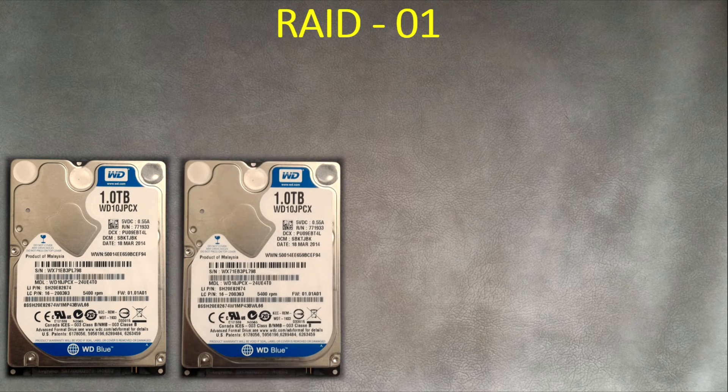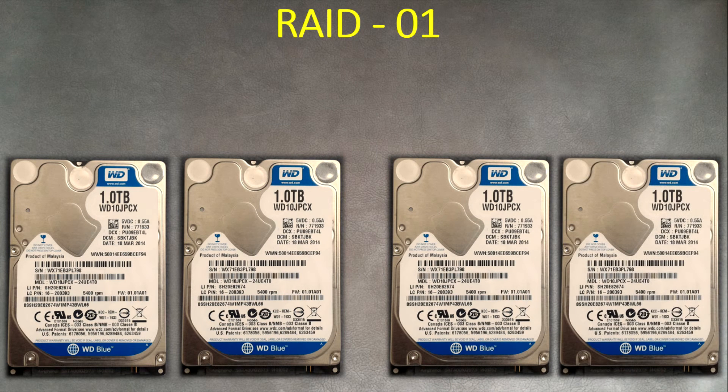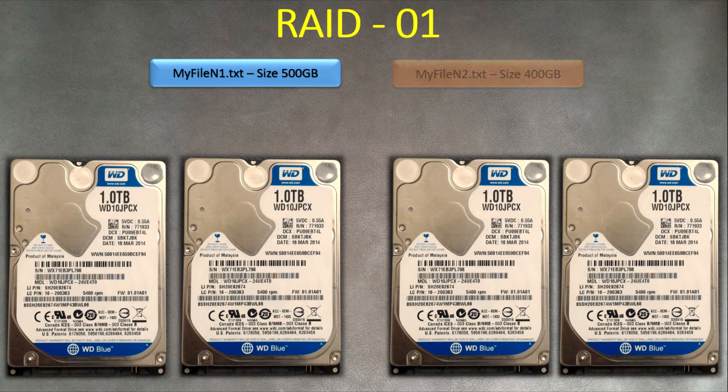Hi guys, in this lesson I will explain what RAID 01 is. It is very similar to RAID 10 — you combine your hard drives into one. You need a minimum of four hard drives. For example, here we have four drives with one terabyte each, and we have two files. Let's see how this array presents itself as RAID 01.